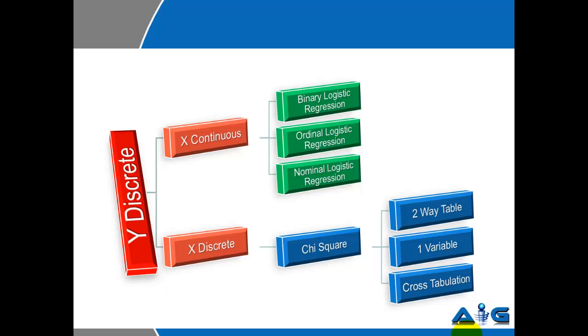You have three tests that are possible. The first test is referred to as binary logistic regression or BLR, the second is referred to as ordinal logistic regression or OLR, and the third is nominal logistic regression or NLR. Should your Y and X both be discrete data, you have the chi square test.